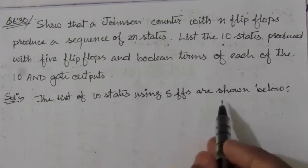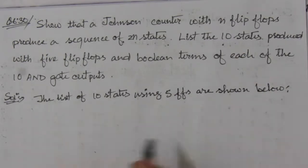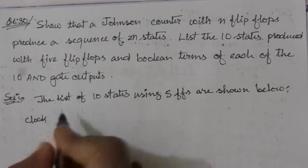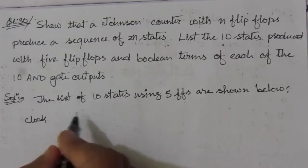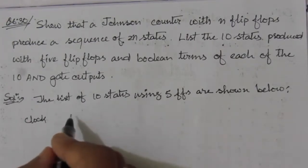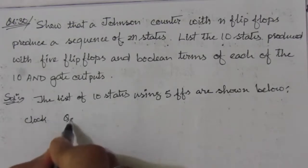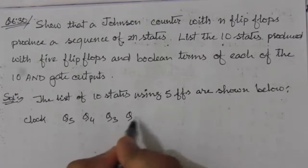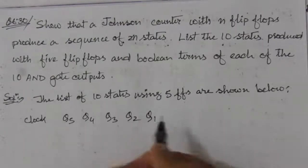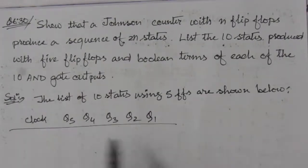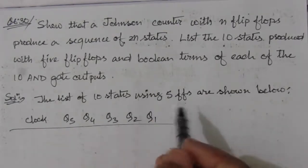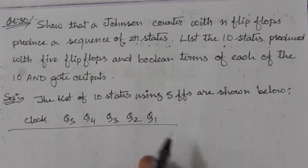Suppose we have a clock and the outputs of the five flip-flops: Q5, Q4, Q3, Q2, Q1. With five flip-flops we expect 10 states. These are the five flip-flop outputs.